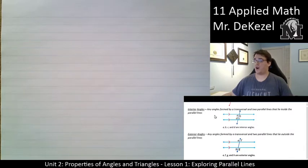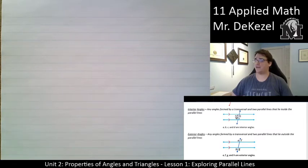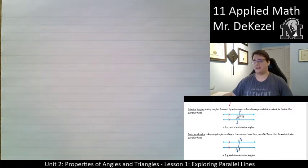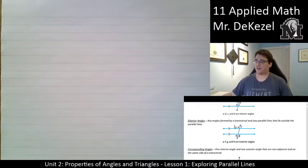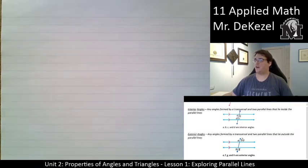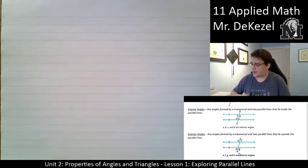When a transversal crosses parallel lines they create angles. These are interior angles A, B, D, and C — interior because they are between the lines. Here we have exterior angles: any angles formed by a transversal and two parallel lines that lie outside of the parallel lines. So we have interior and then exterior, and I feel like that is fairly self-explanatory.